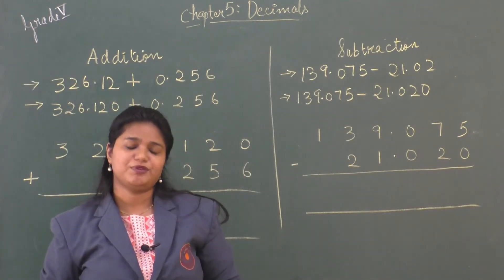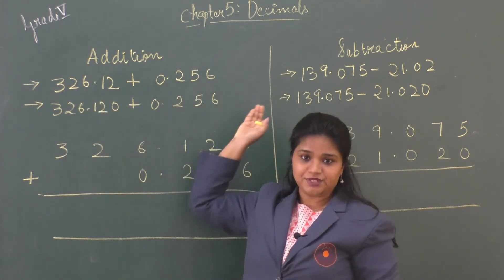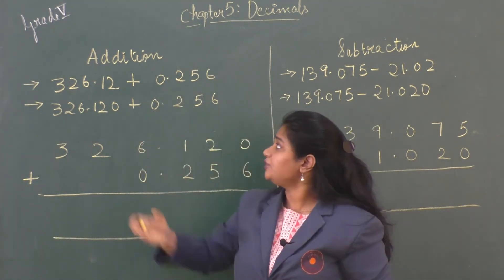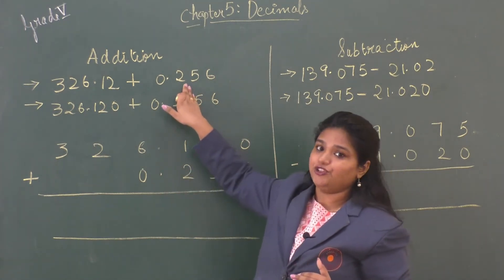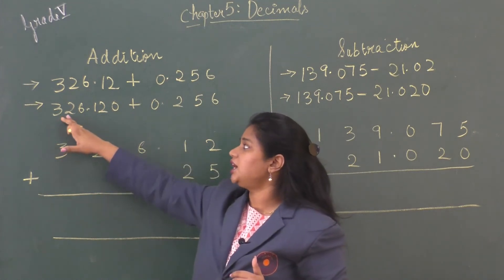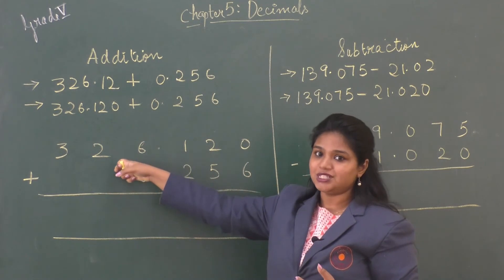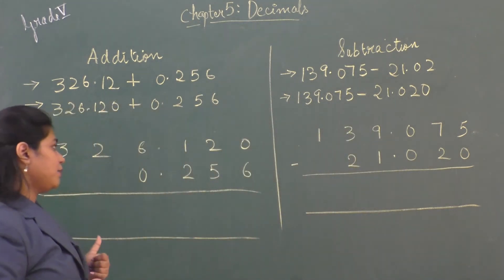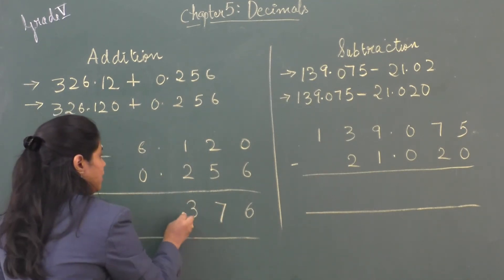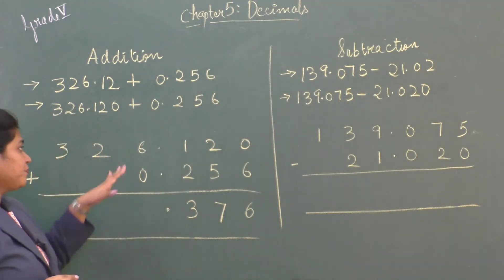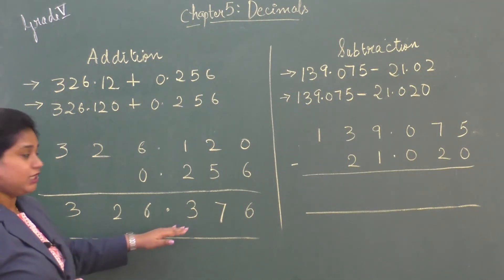Now let's look at examples for addition and subtraction of decimals. Add 326.12 + 0.256. These are unlike decimals, so first convert: the maximum decimal place is 3, so add a zero to the first number making it 326.120. Now arrange in column form and add: 0+6=6, 2+5=7, 1+2=3, place the decimal point, then 6+0=6, 2, 3. The sum is 326.376.